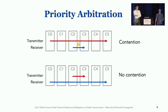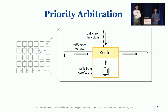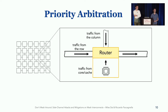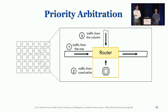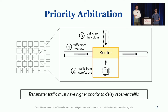Speaking more generally, there are three different ways in which traffic might enter a tile: it can come from the column, from the row, or it can be injected from the local cache or core. By testing many different placements, we can exercise these different conditions and reverse engineer the priorities between these different flows. The key takeaway here is that transmitter traffic must have higher priority in order to delay the receiver's traffic.